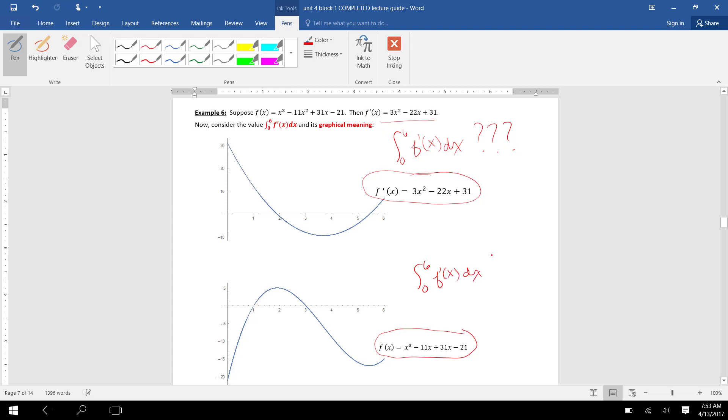Let's first start with the top graph. The top graph is the graph of f prime of x. It's a parabola. And if we were being asked to find the integral from 0 to 6, f prime of x dx, since this is a graph of f prime of x, what we're being asked to do is to find this area between this rate function and the x-axis, where we count area below the x-axis as negative.